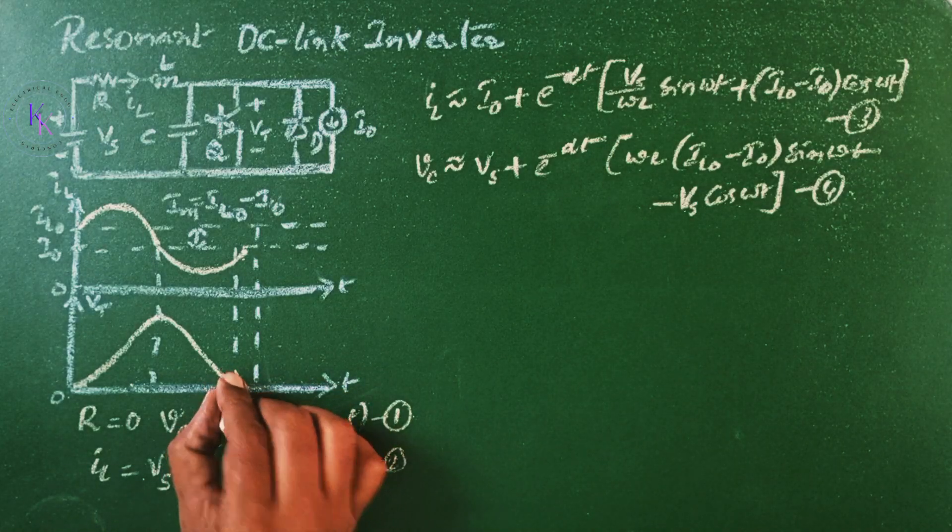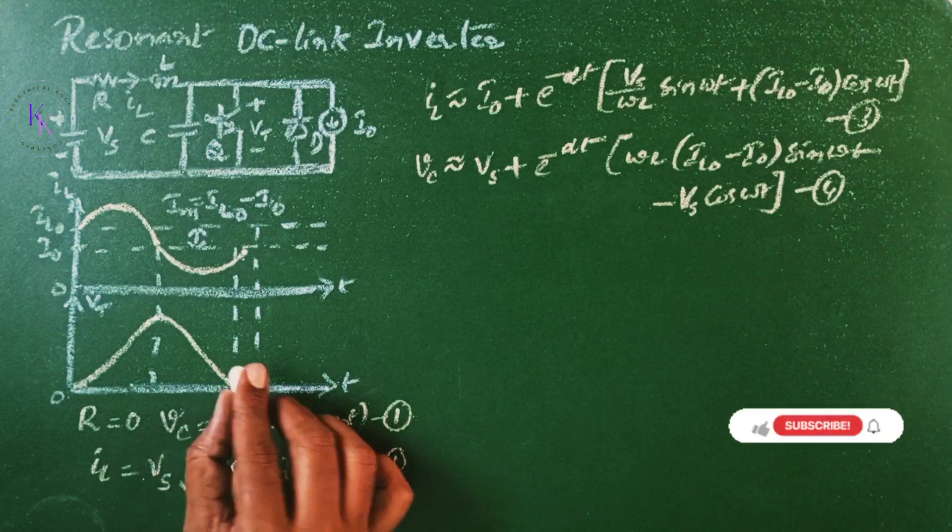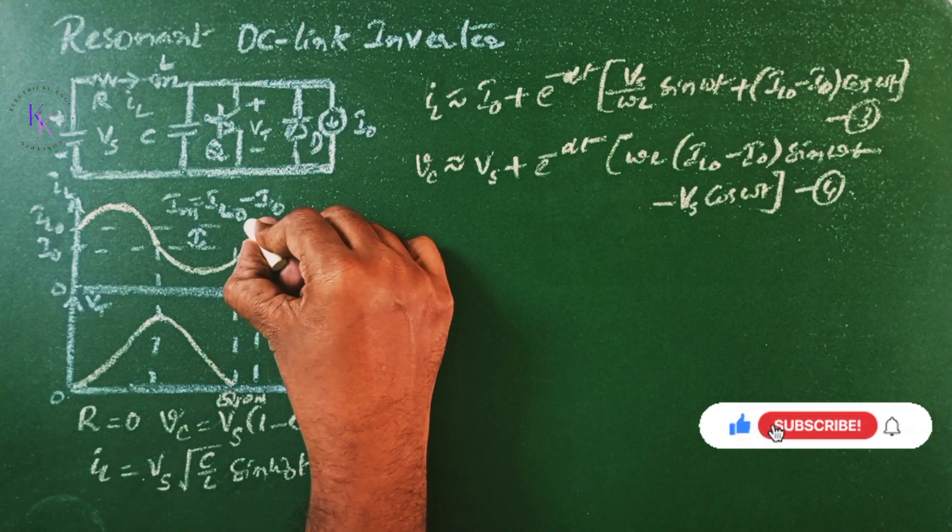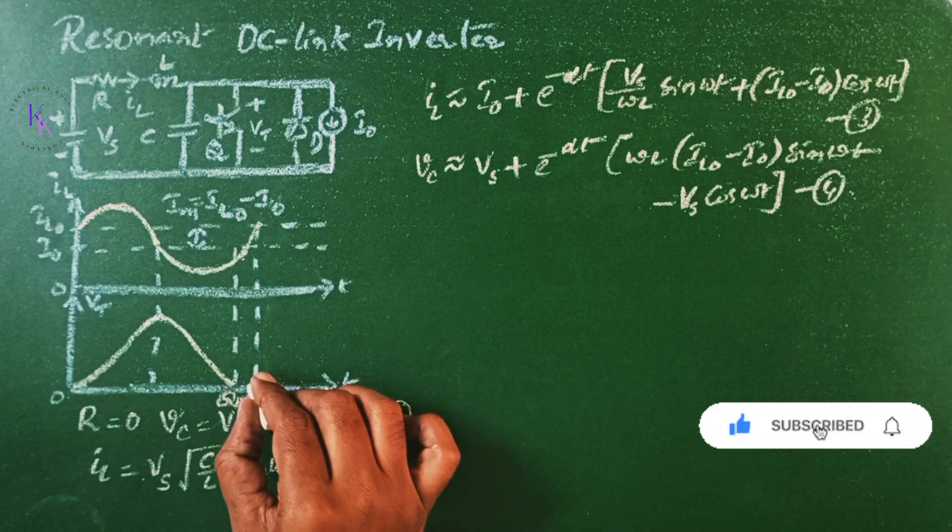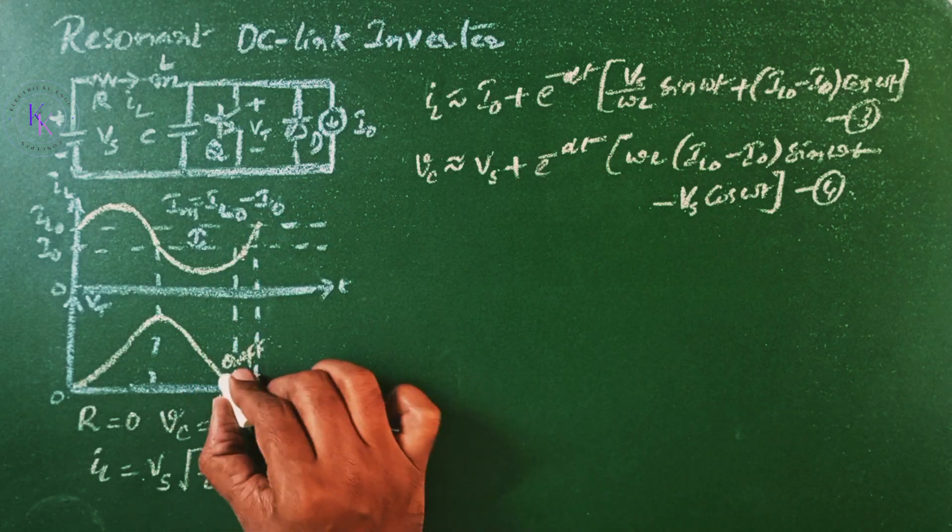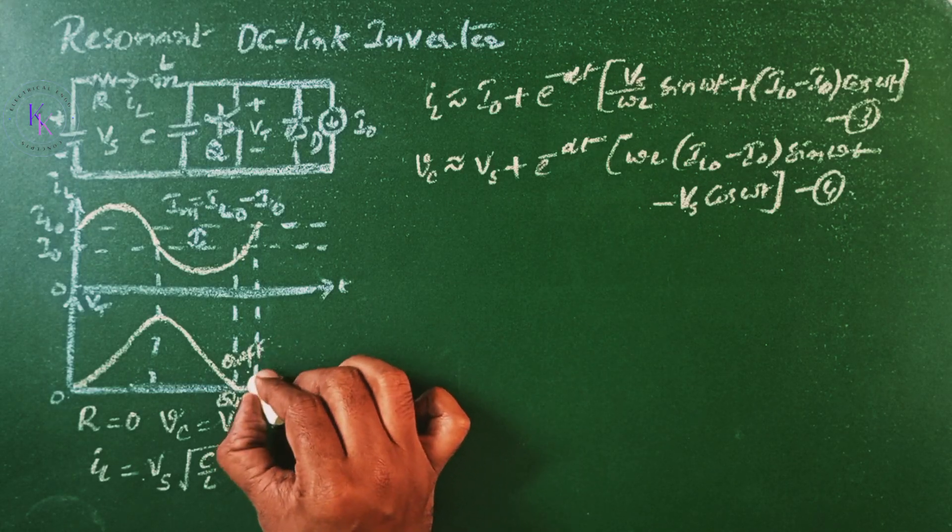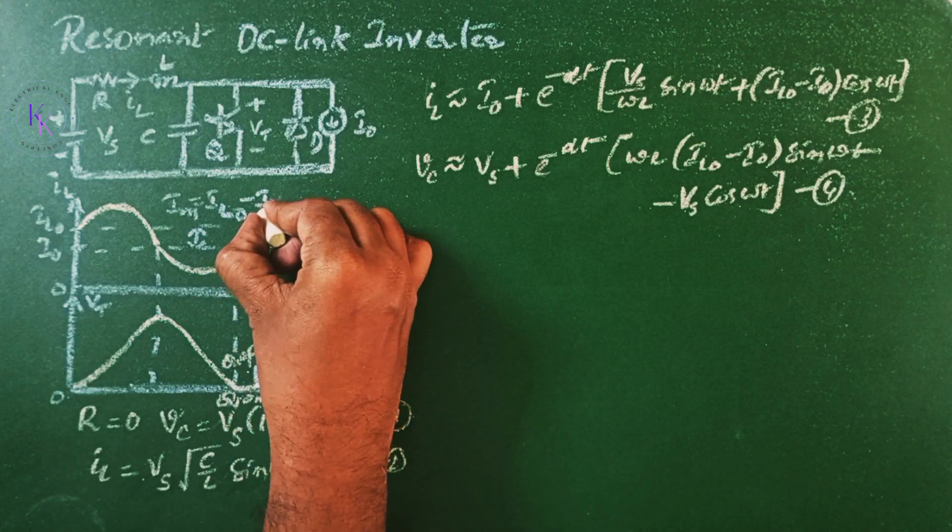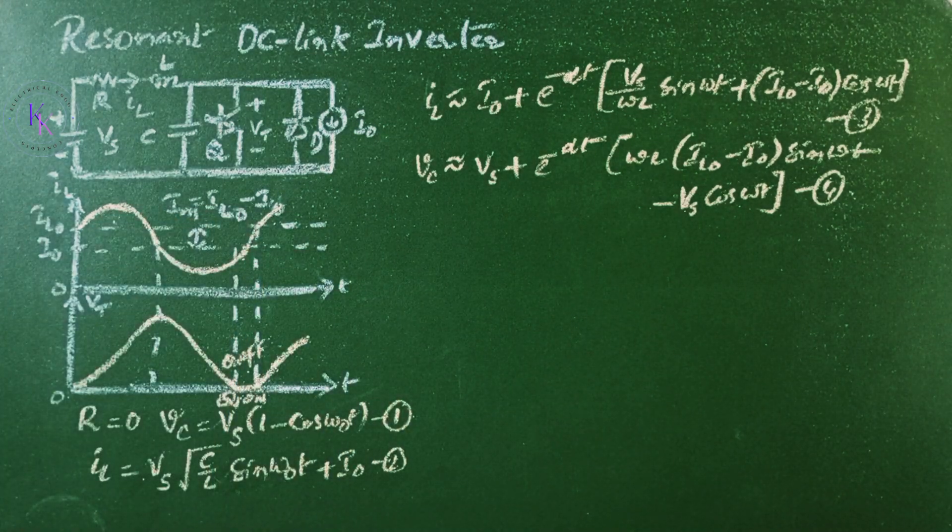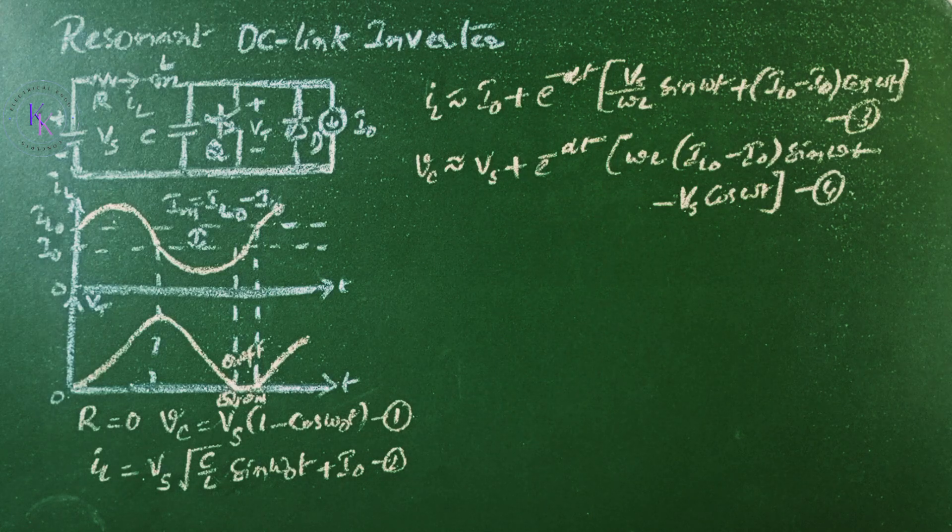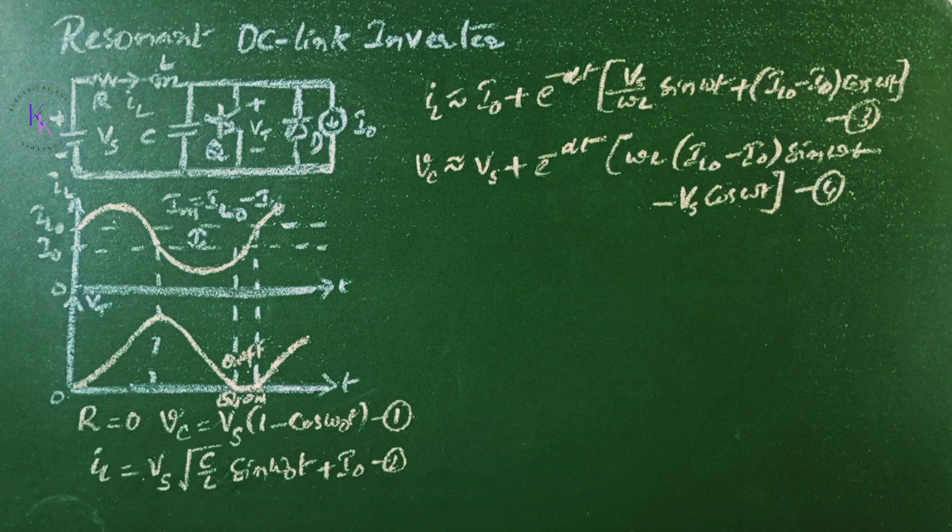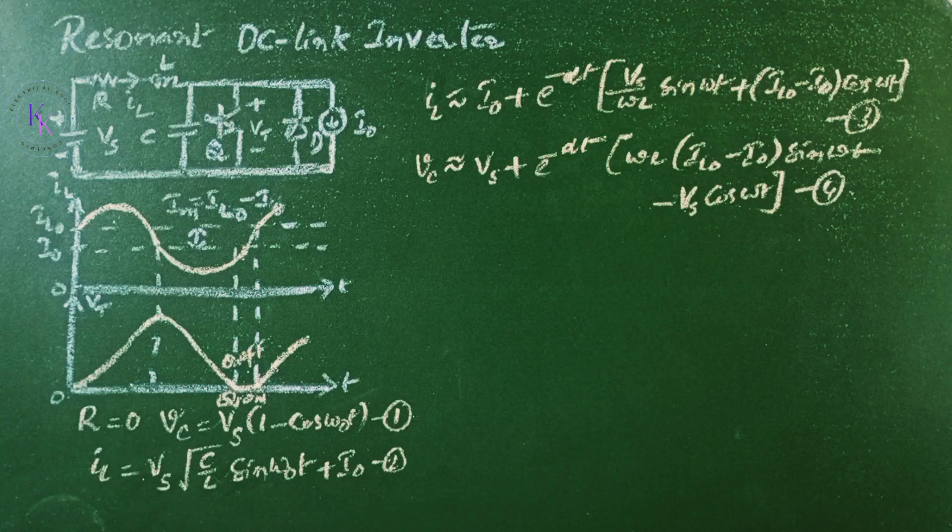When this voltage becomes zero, then the switch need to be turned on. When the current reaches this value of IL, the switch can turn off here, so that the voltage again starts building. And this will follow as it is before here. The switch is turned on when the capacitor voltage falls to zero and is turned off when the current IL reaches the value of initial that is IL0.